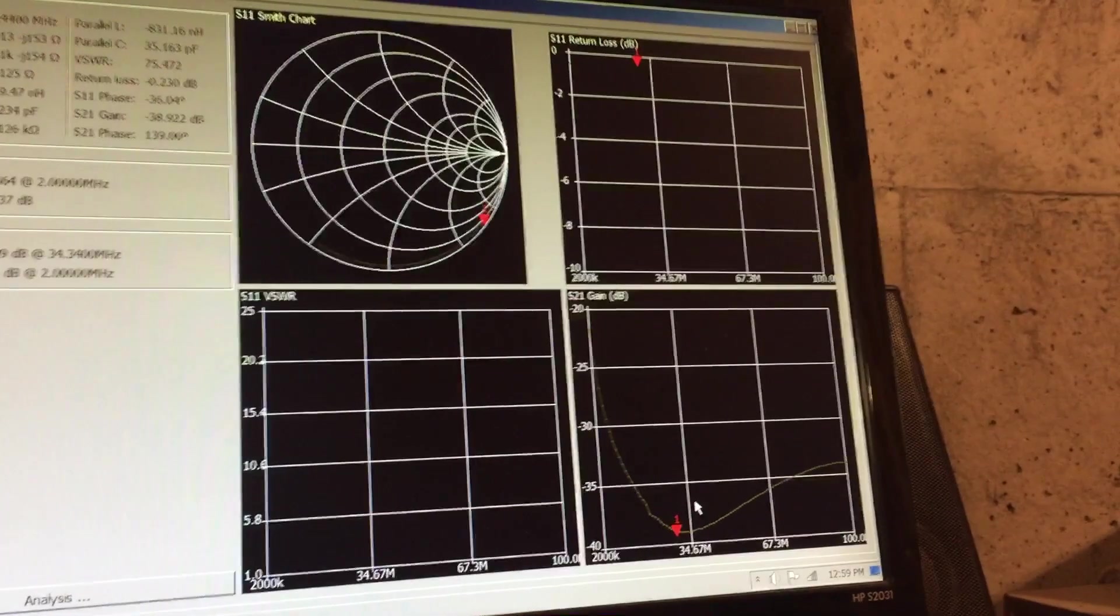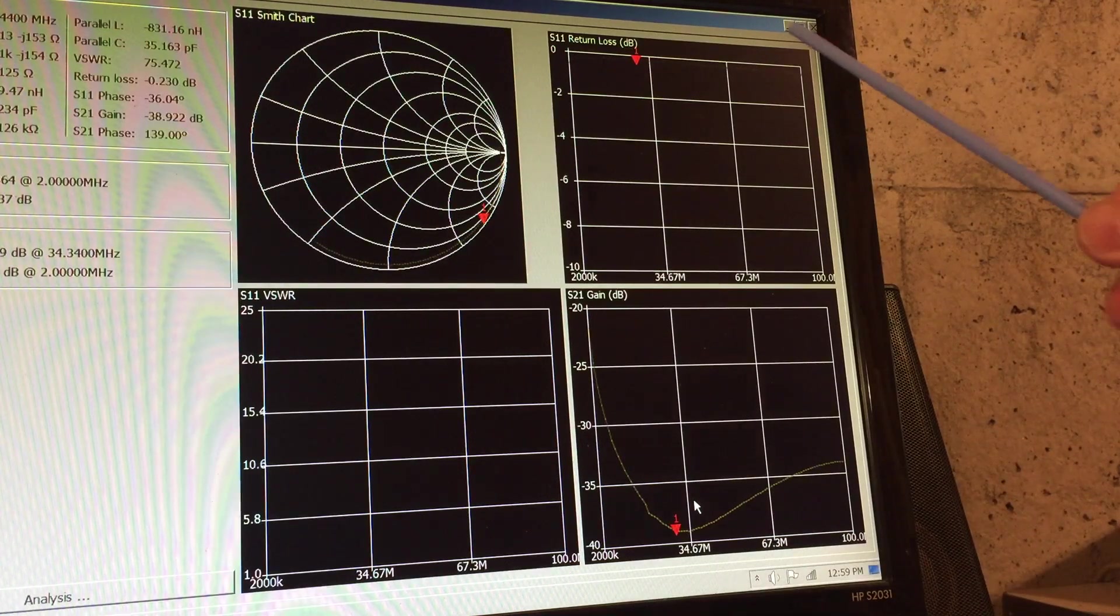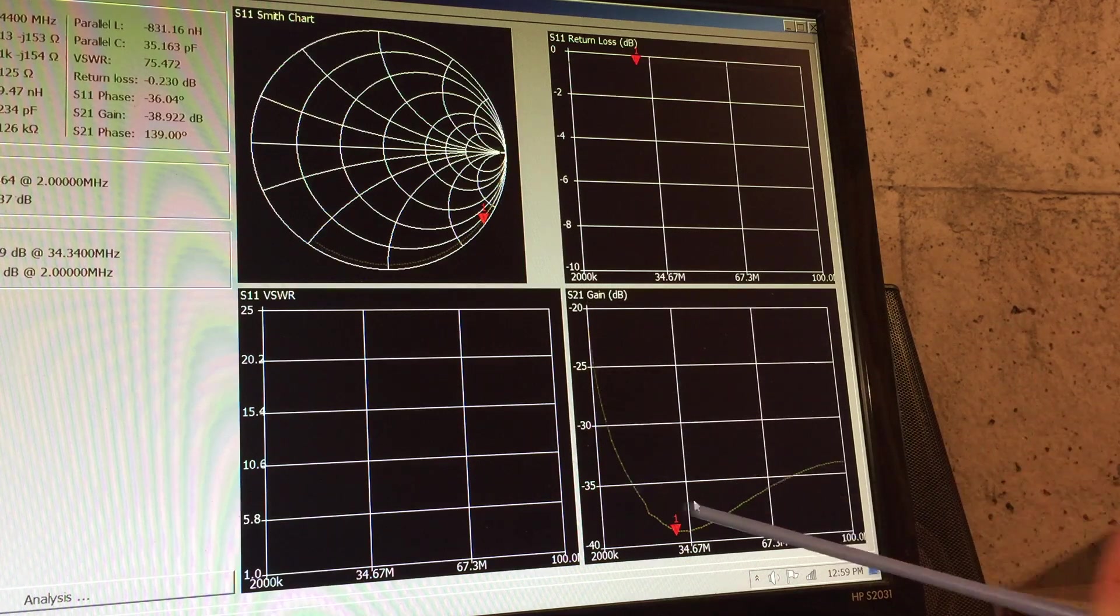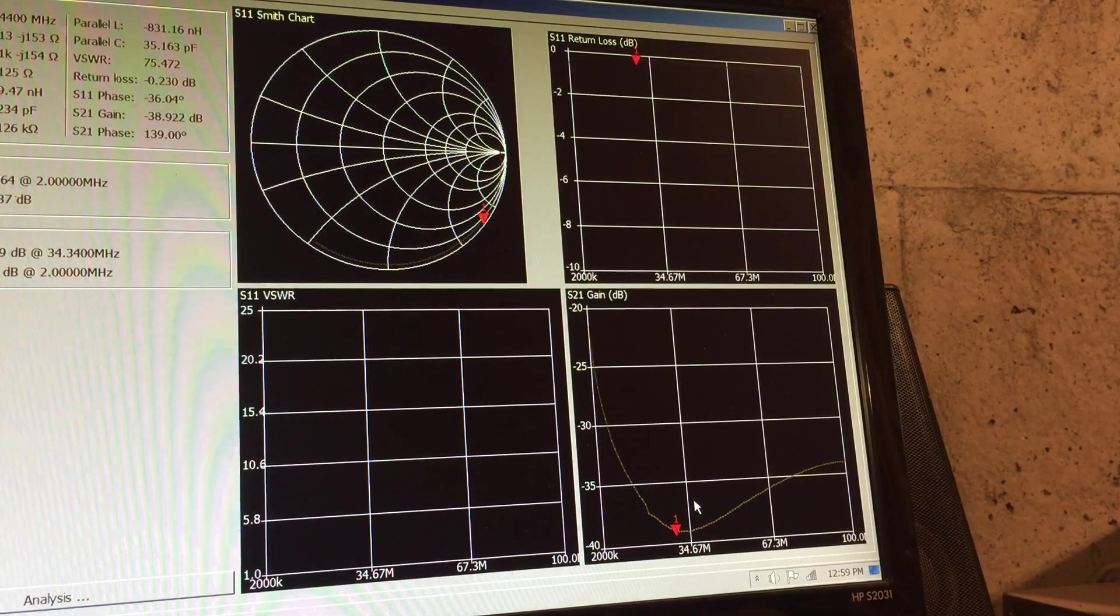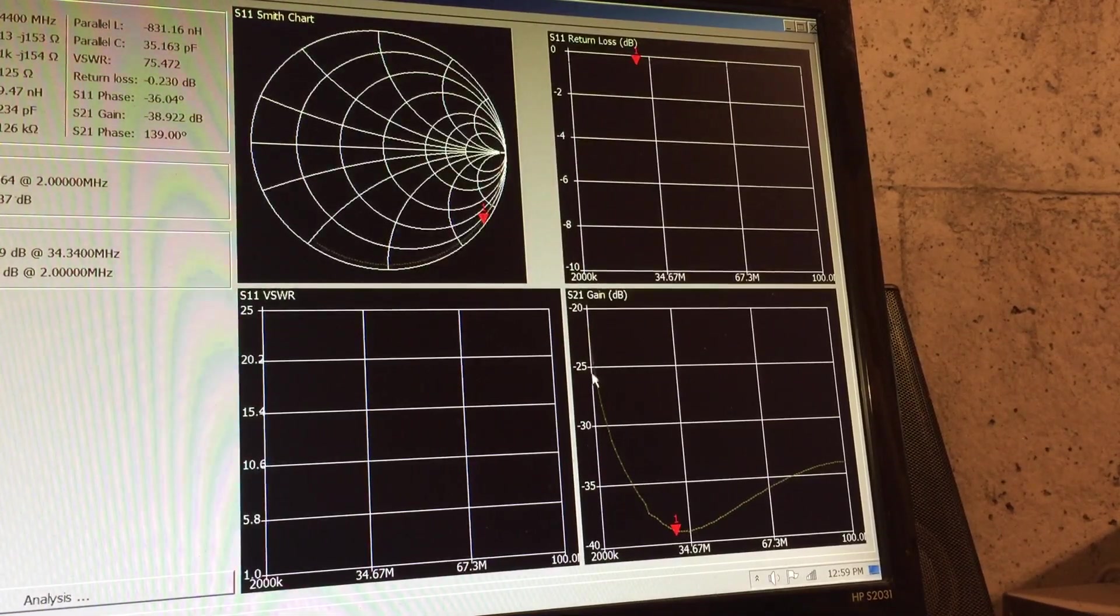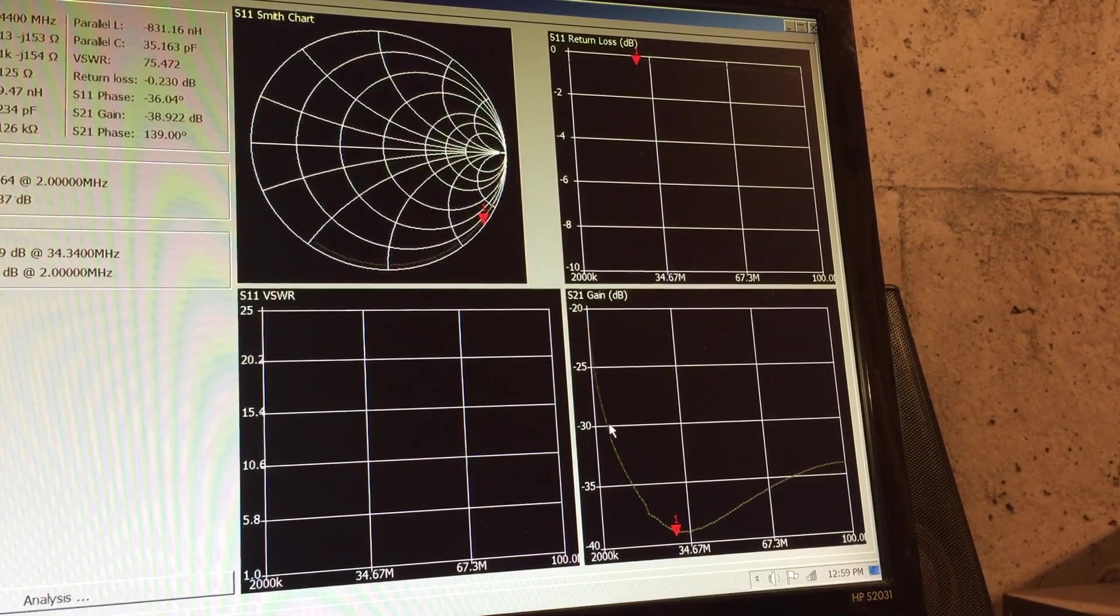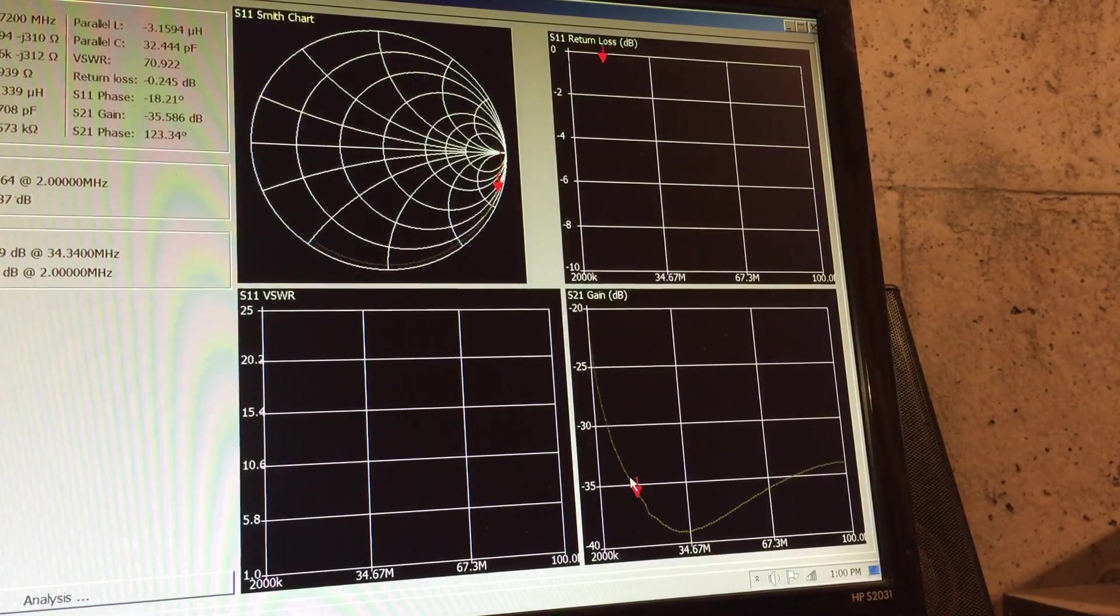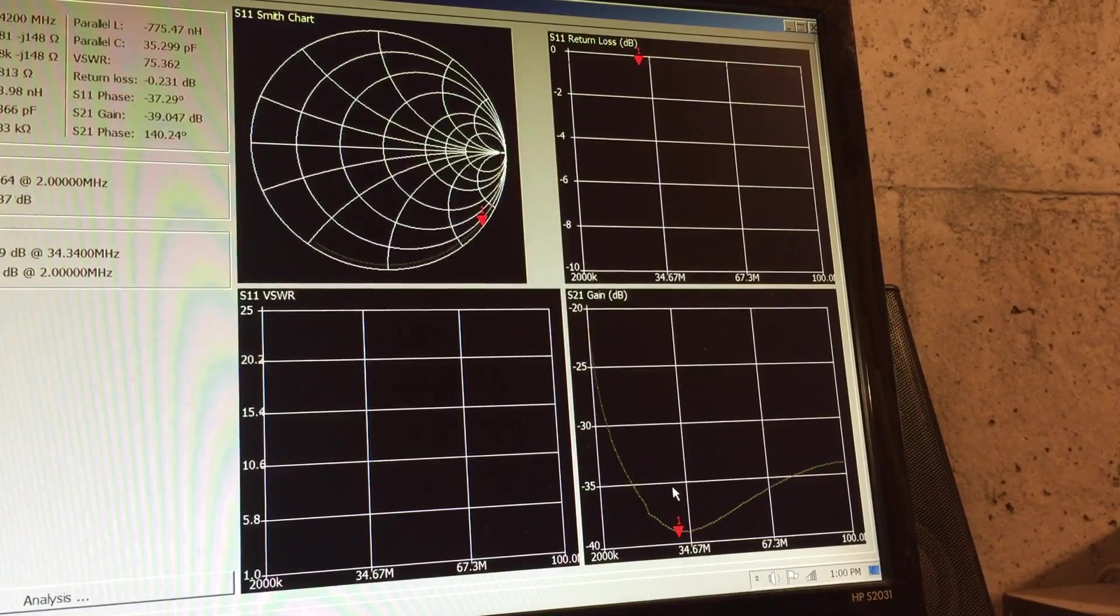I'm particularly interested in S11 which is our return loss or reflected power and S21 which is the gain. Right now the return loss is quite high and the gain is dropping off significantly. What you see is it's very broad banded. My scan is starting at 2 megahertz ending at 100 megahertz. The high frequency range is 1.8 to 30 megahertz. On the low end here I'm getting about minus 25 dB which is excellent. At 7 megahertz I'm getting about minus 30 dB.